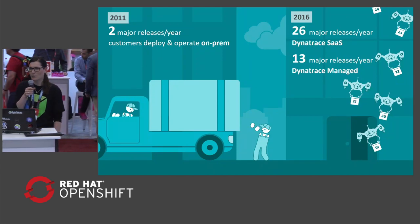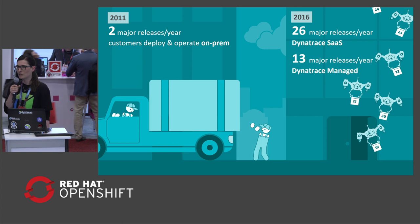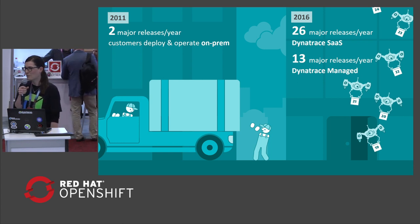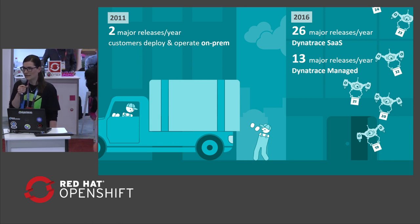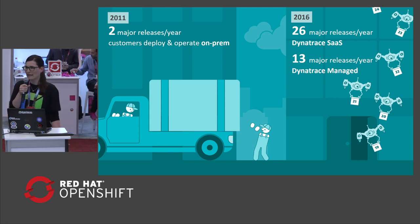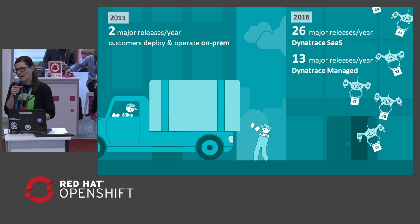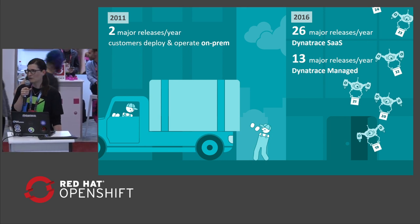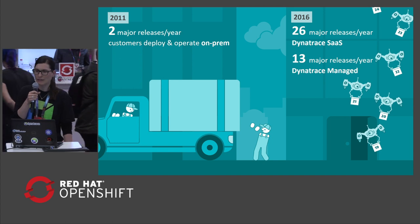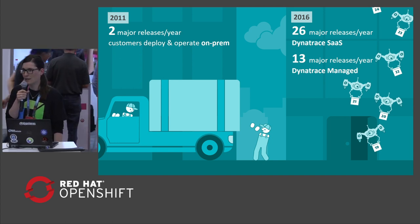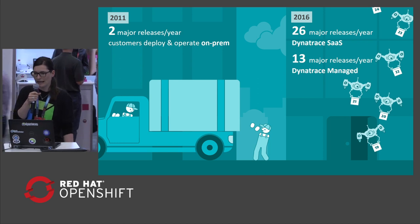We at Dynatrace do this 26 times a year. We have a team of 600 plus developers releasing every two weeks new features and new capabilities for our customers. We started out in 2011 releasing only two major releases per year, and by 2016 we were doing 26 major releases of our Dynatrace SaaS offering and 13 major releases per year of our Dynatrace Managed offering.